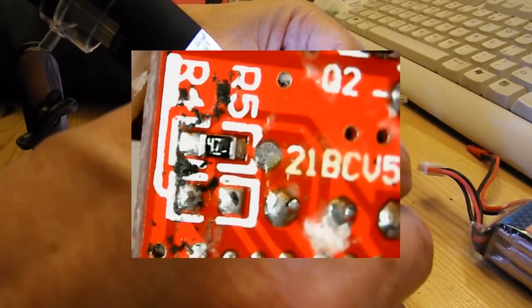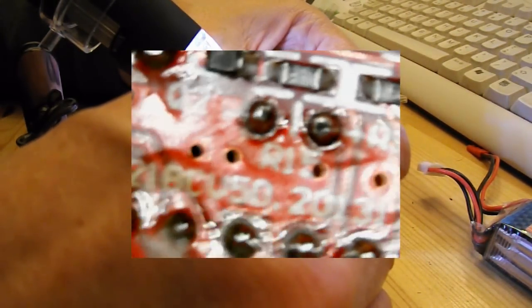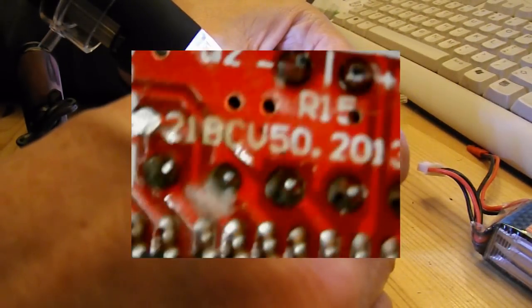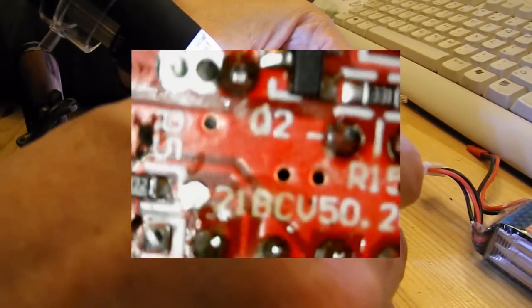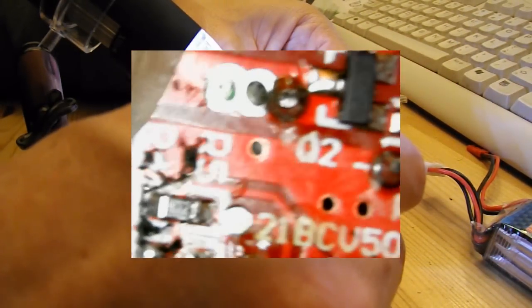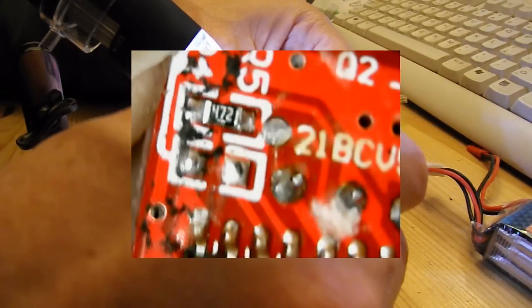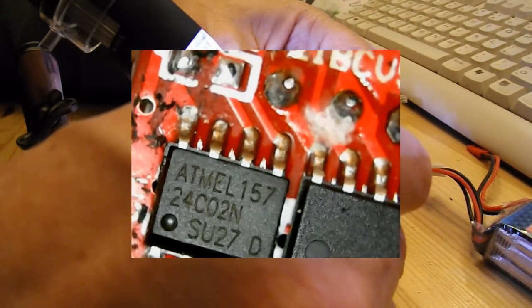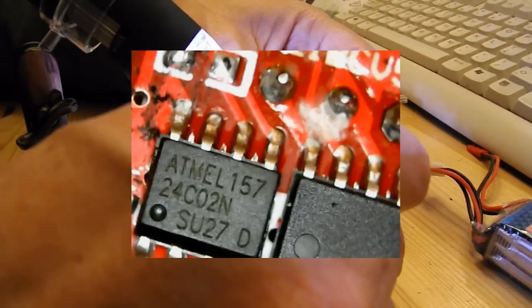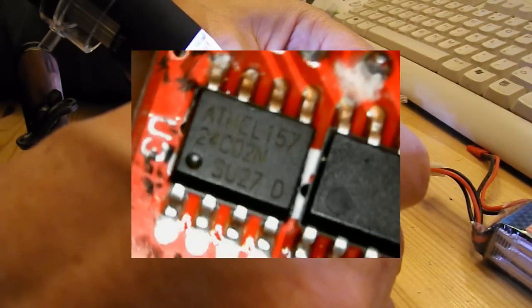Okay, come along here. We've got anything else. Another resistor with a bit of muck on it. I think that says 472 on it. Atmel 157, 24, C02N, SU27D.